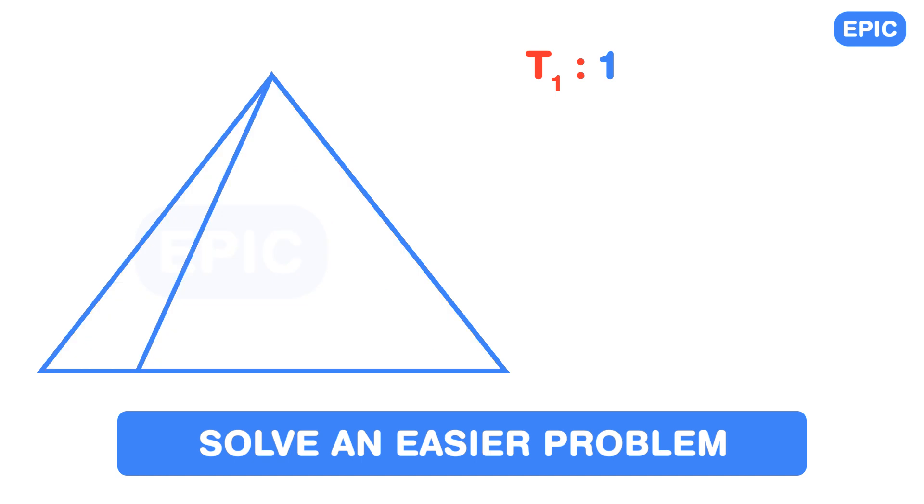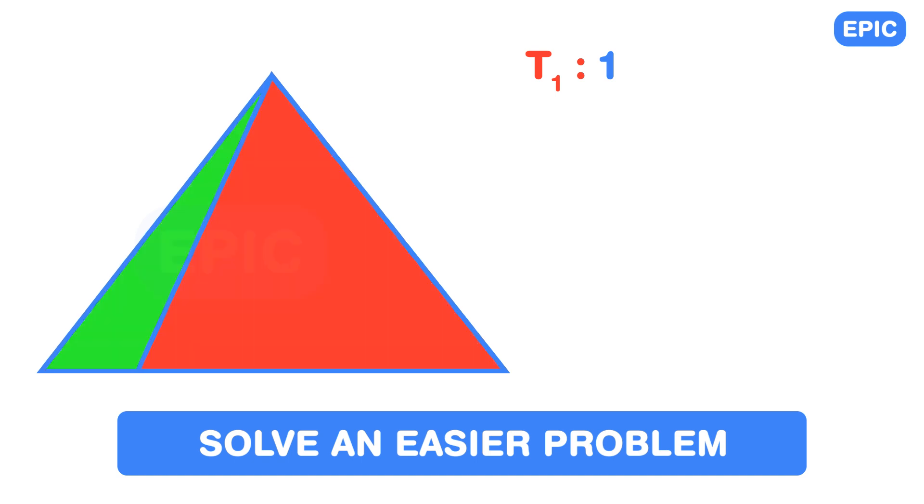For a two-part triangle, adding a line will create two more triangles. So T2 will be T1 plus 2, which is 1 plus 2.